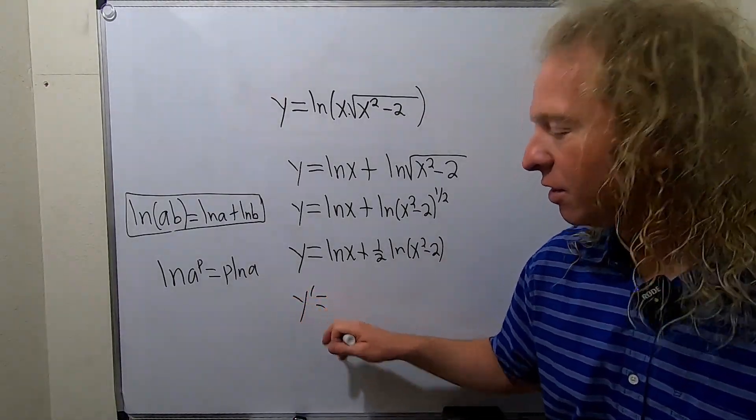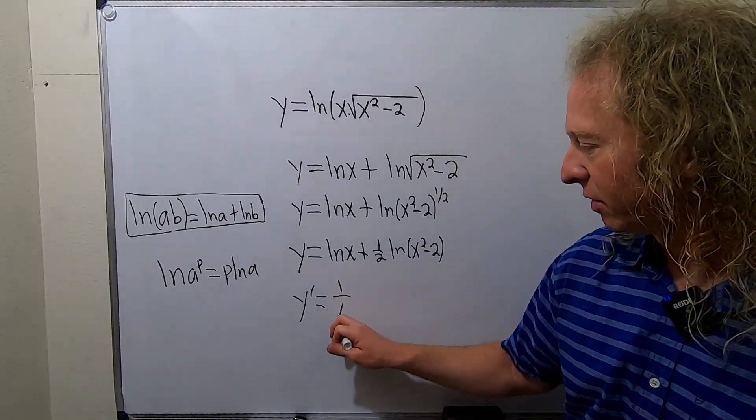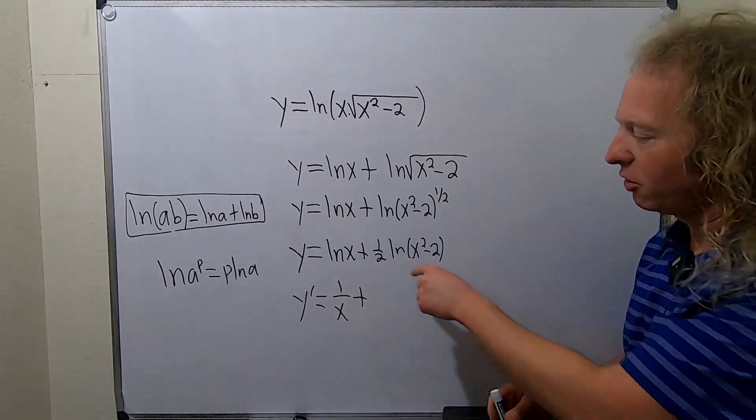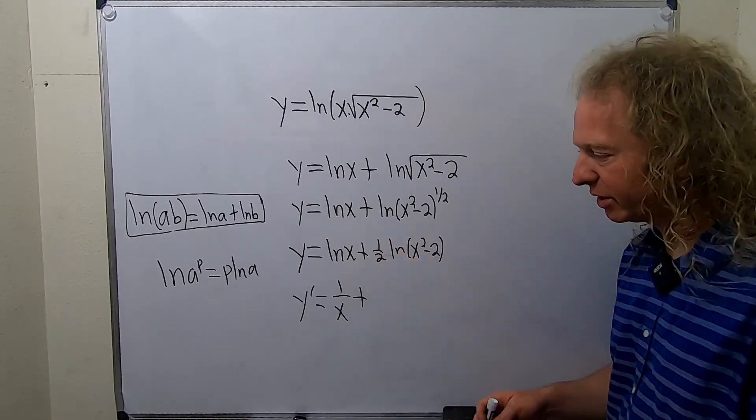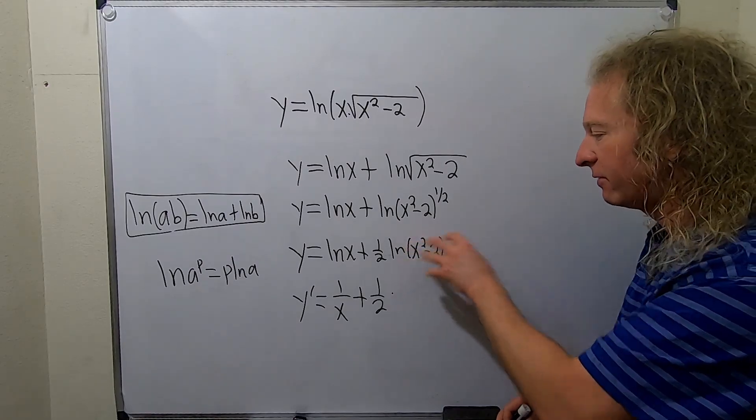The derivative of the natural log of x is 1 over x plus. Here, the 1 half hangs out because it's a constant. So we have 1 half times, and then the derivative of this.